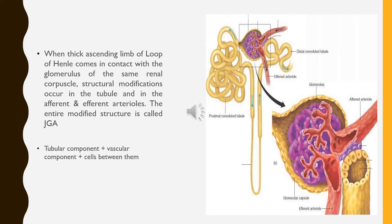The thick ascending limb of the loop of Henle passes in between the afferent and efferent arterioles of its own glomerulus. In doing so, it comes very close to the afferent arteriole. Here, some structural modifications occur in the tubule and the afferent and efferent arterioles. The entire modified structure — both tubular and vascular components and the cells between them — is called the juxtaglomerular apparatus.